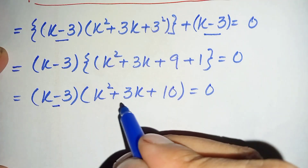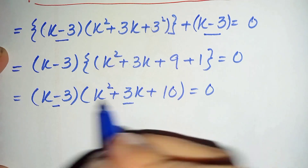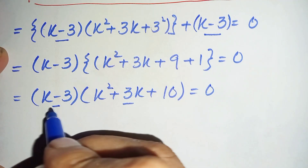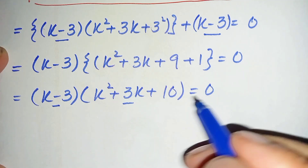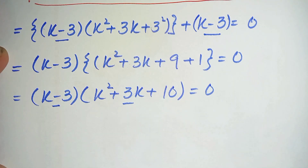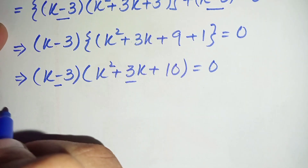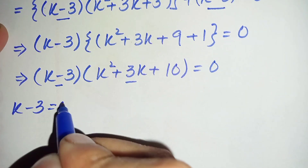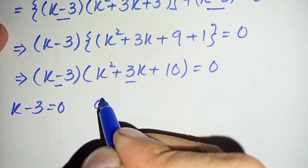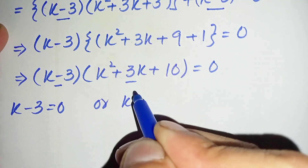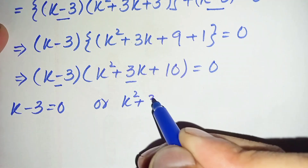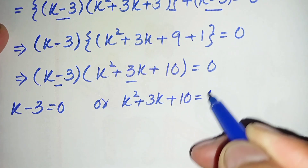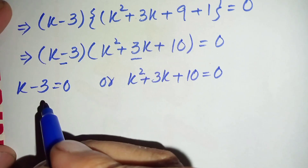We have a linear equation and a quadratic equation whose product is zero. So either the linear equation equals zero or the quadratic equation equals zero. This gives us: k minus 3 equals zero, or k square plus 3k plus 10 equals zero.